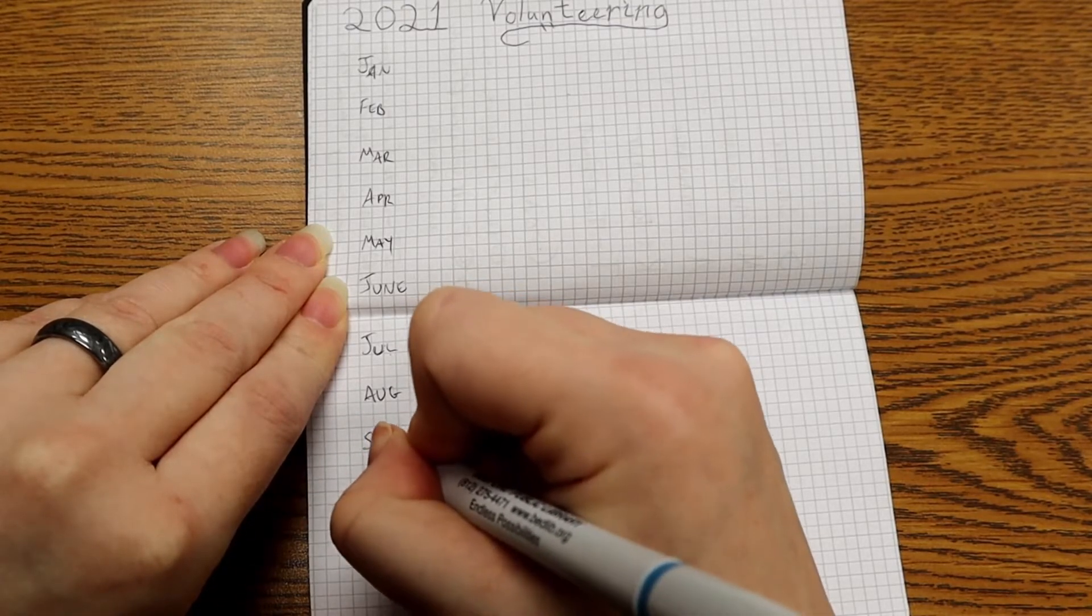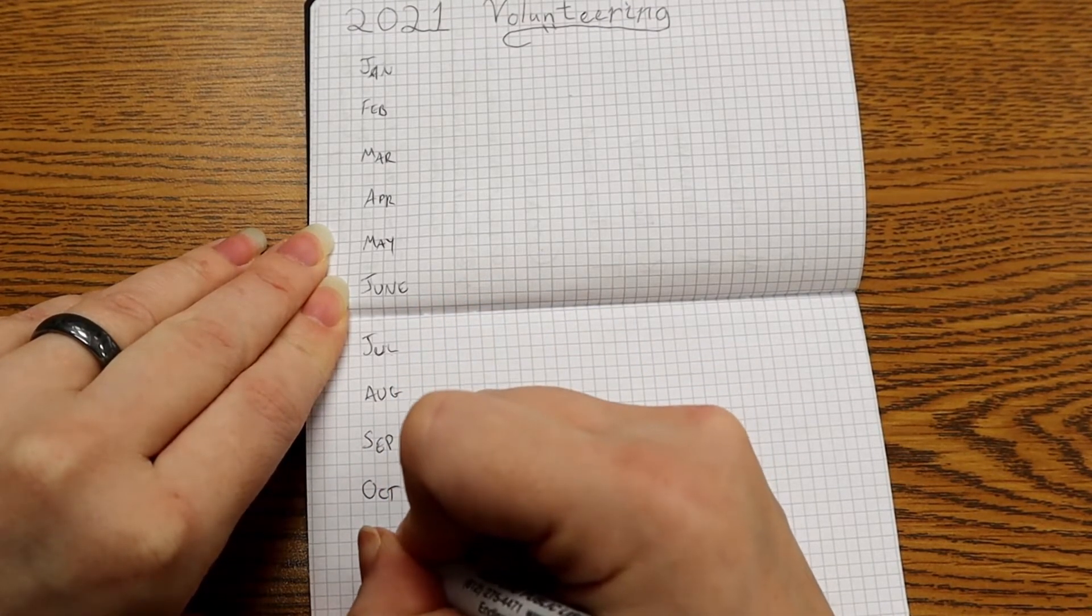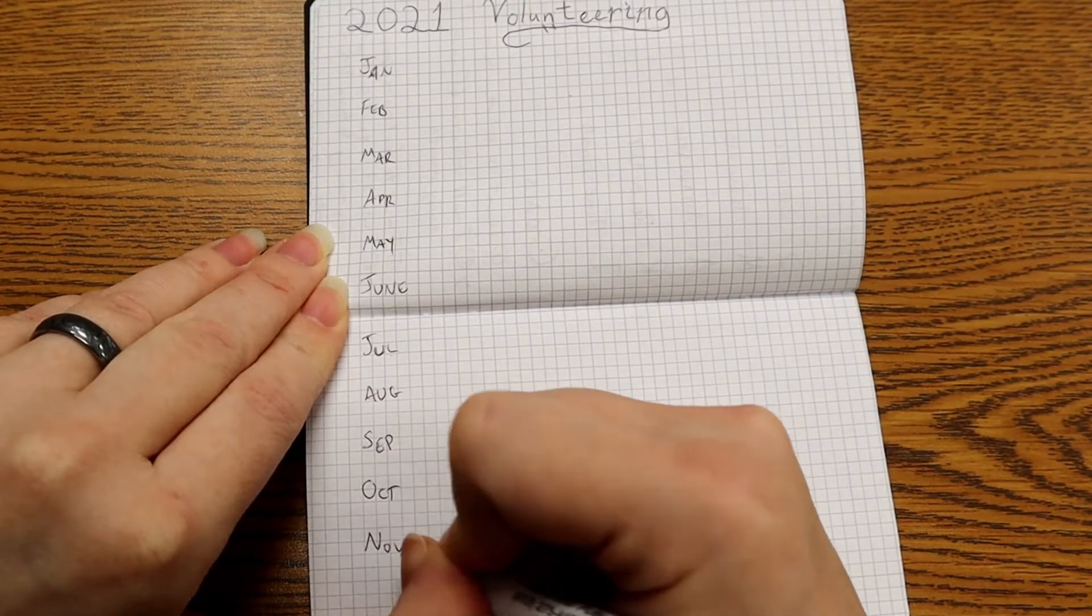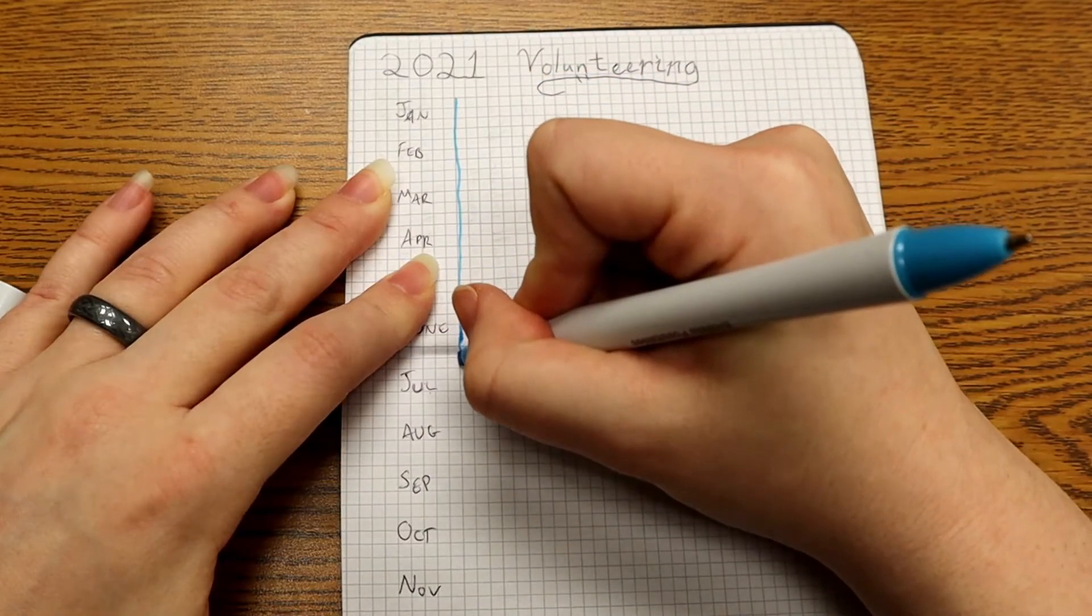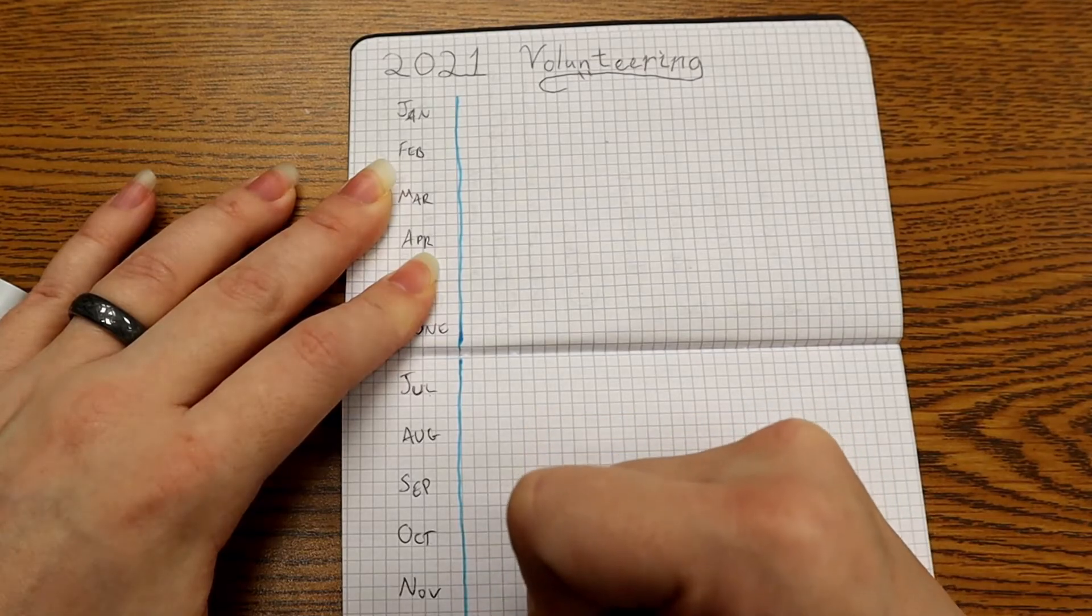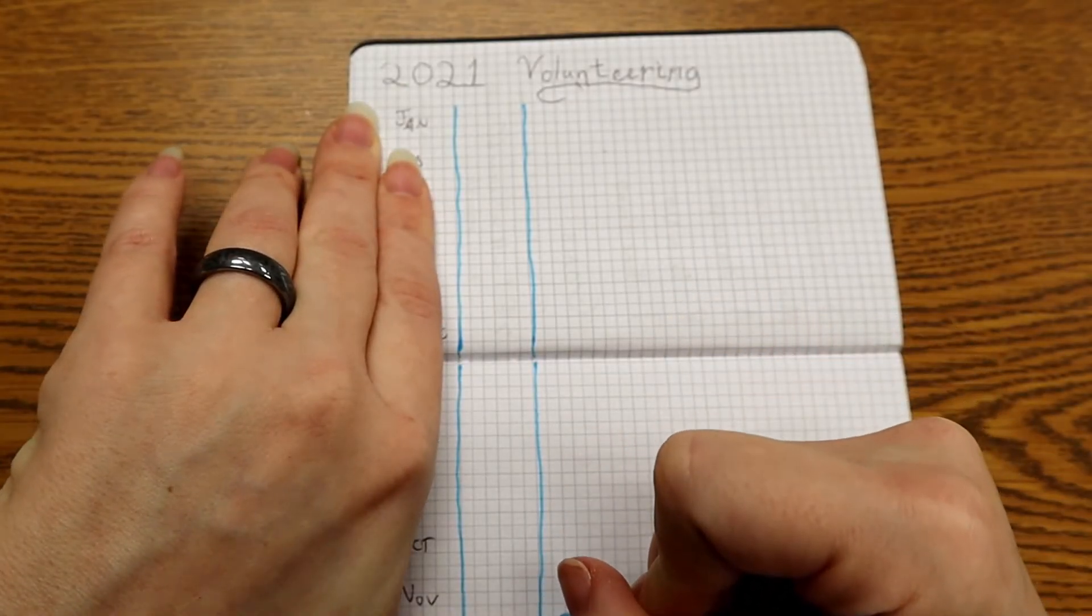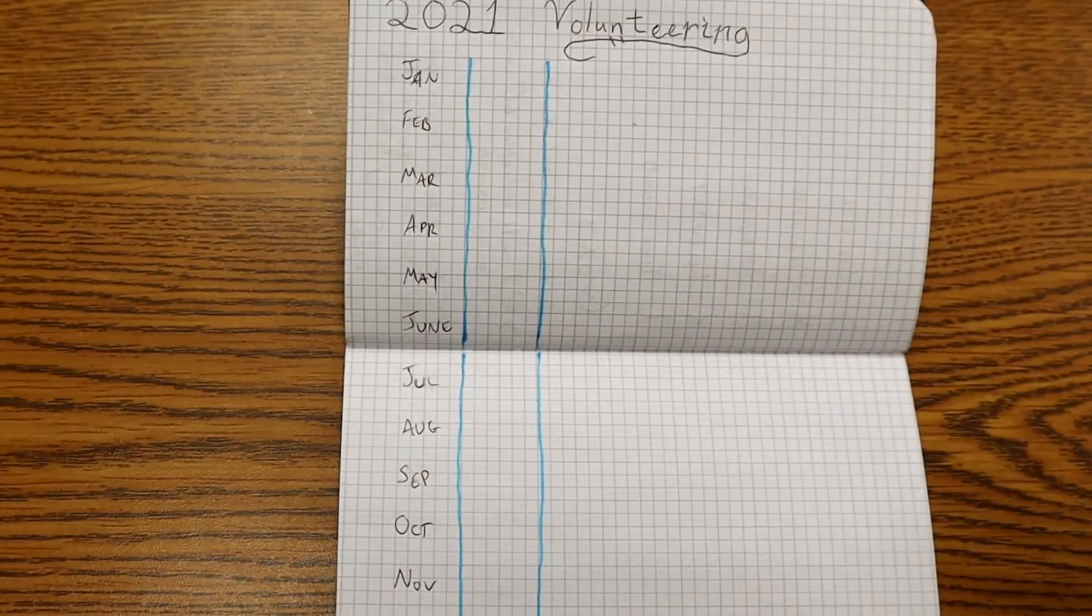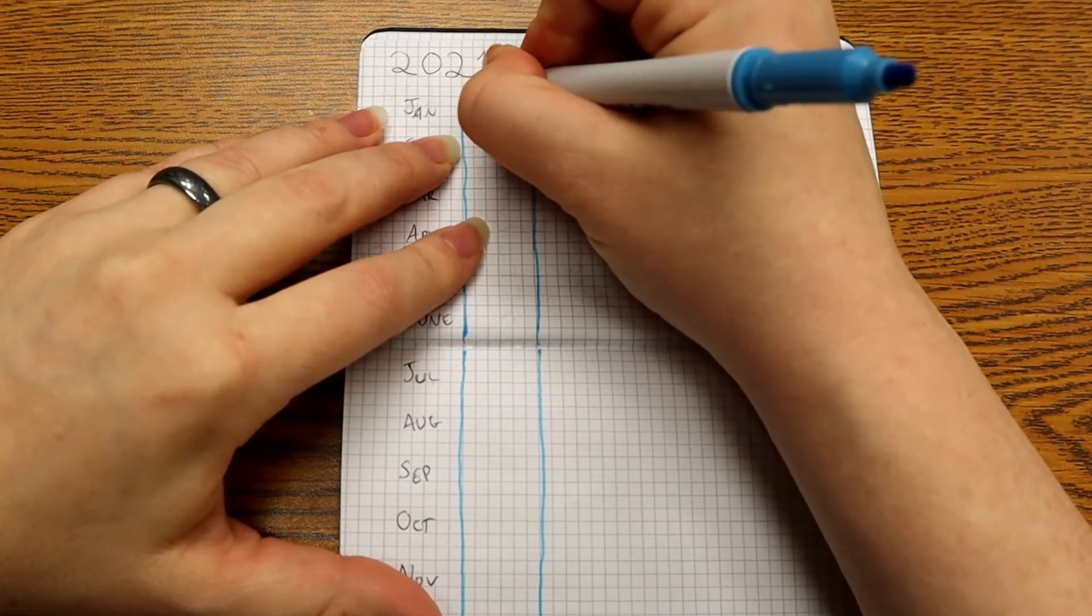We're going to start off just putting the months down the side. I'm giving myself a little extra room just to be able to see these a little bit better. I'm going to mark this line to make sure that it's easy to separate the month and the next thing. Next thing I'm going to be doing is checking the time.